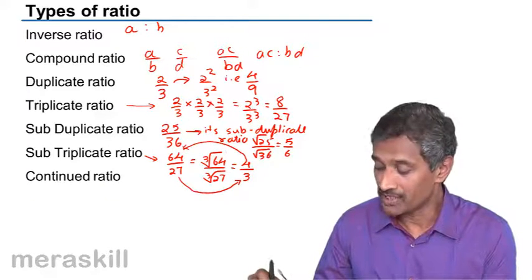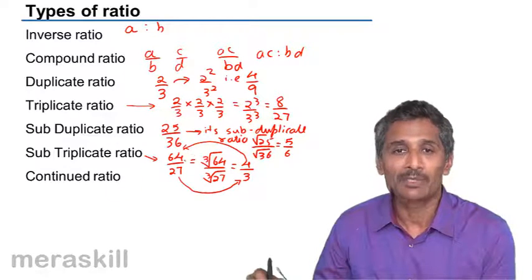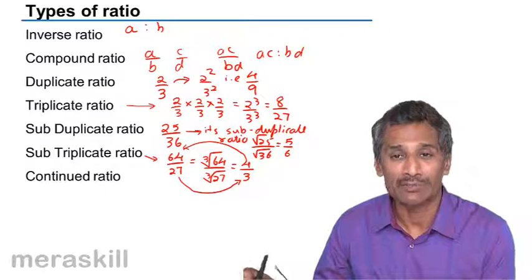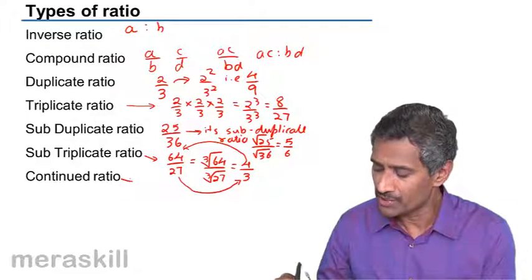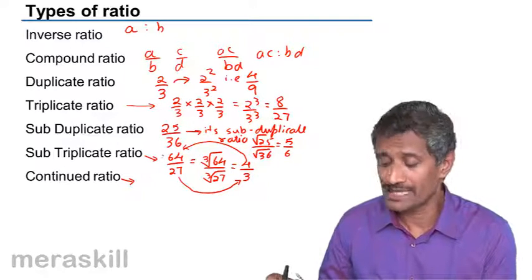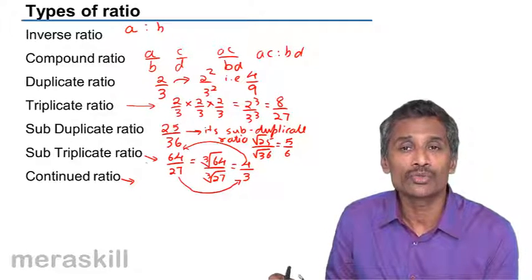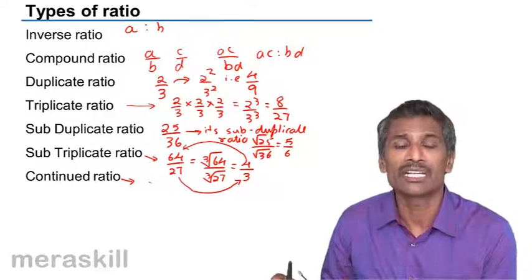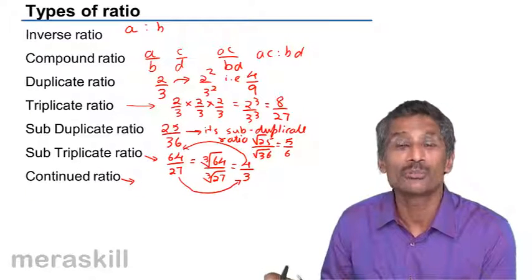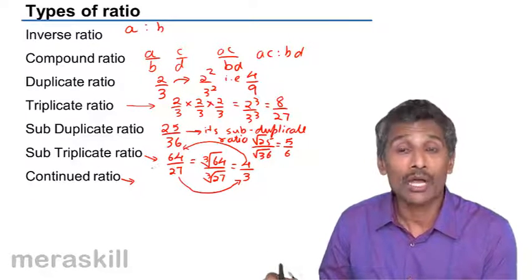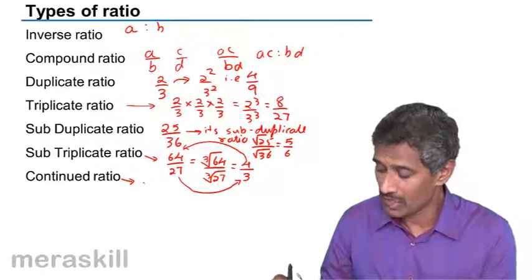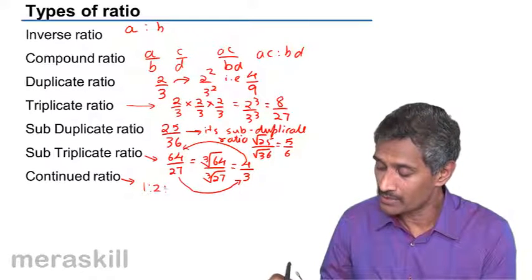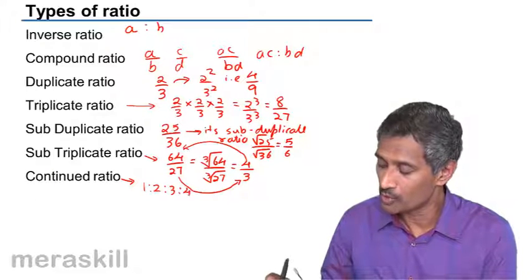Then continued ratio - in all these cases we took ratio containing two terms. If it is a ratio containing more than two terms and you're continuing the process of ratioing, I'll give you the example of the angles of a triangle. The angles of a triangle could be in the ratio 1 is to 2 is to 3 is to 4. We say this is a continued ratio which has got more than two terms.